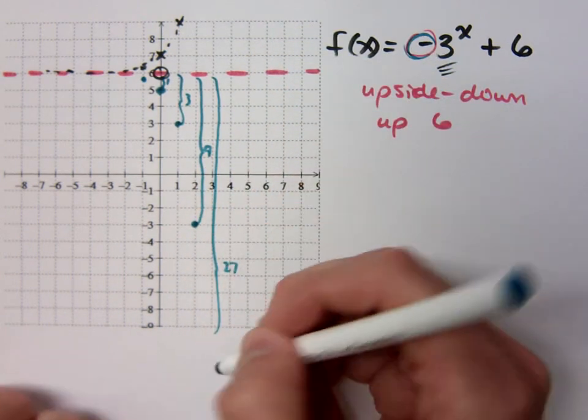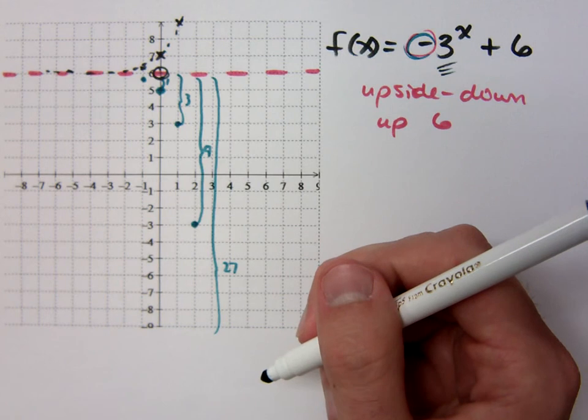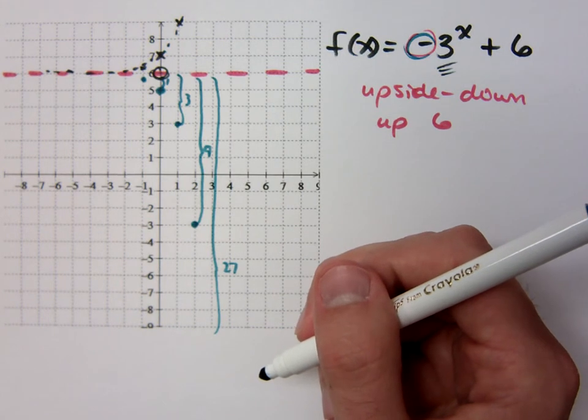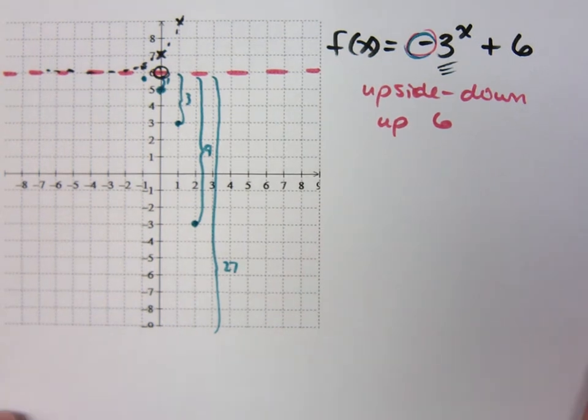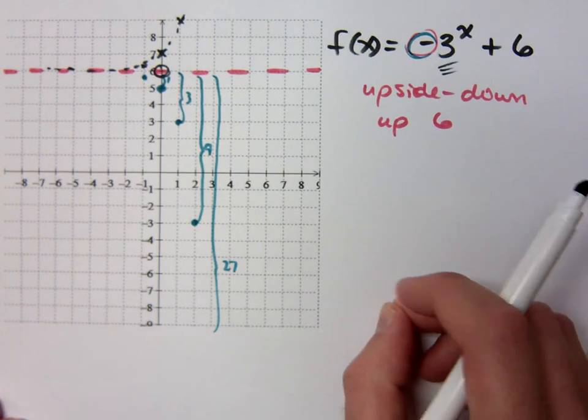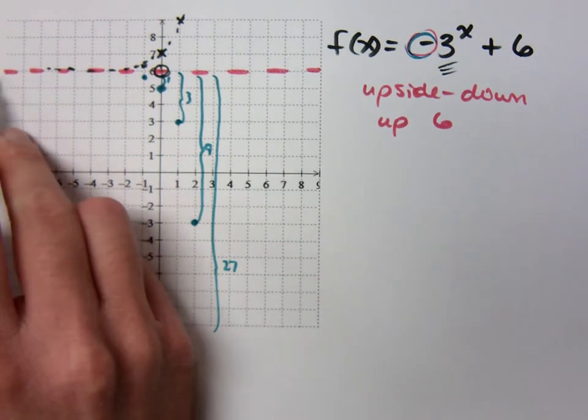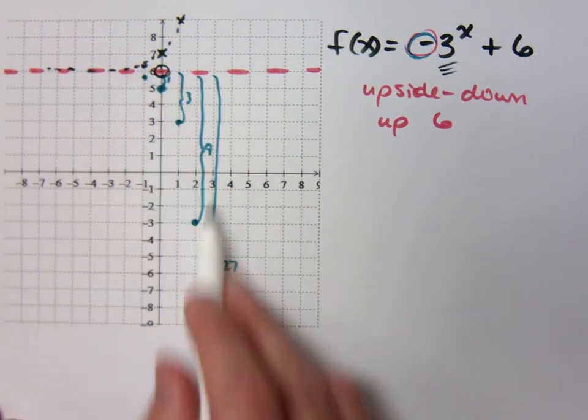And you're going to get 27. Of course, 27 is too far off there, right? Does that make sense? So this guy gets steeper and flatter faster. The larger the base, the flatter it is, and the steeper it gets.